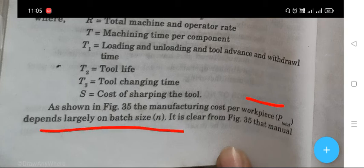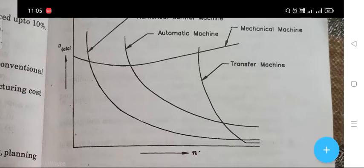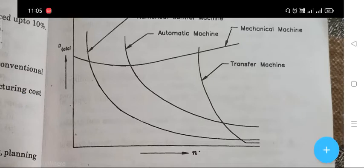As shown, the manufacturing cost per workpiece depends largely on the batch size N. The NC system is economical for both small and medium batch production. Automatic machines are preferred for medium or large batch production, and transfer machines are preferred for large batch production.